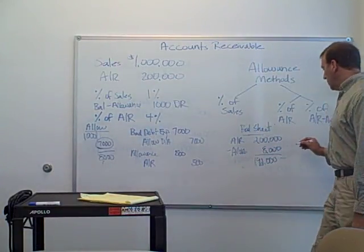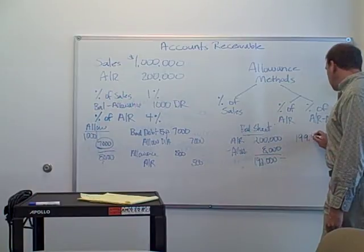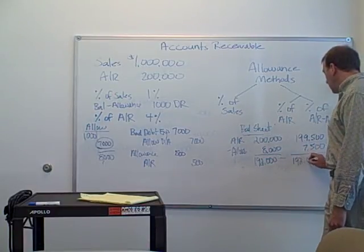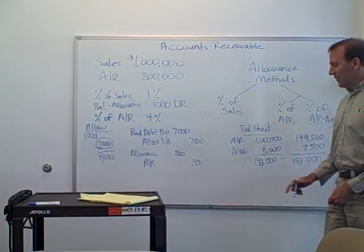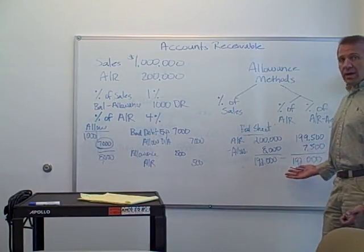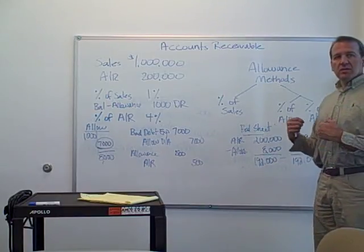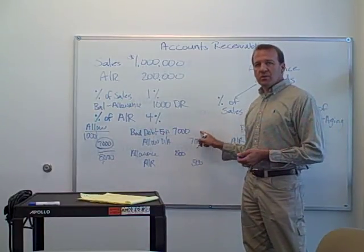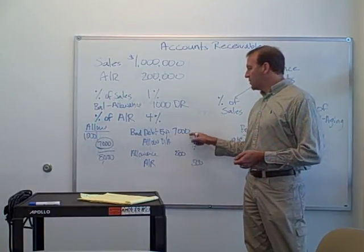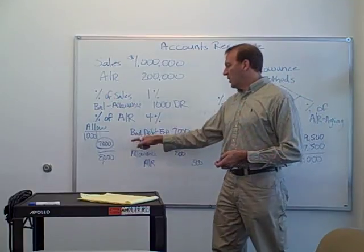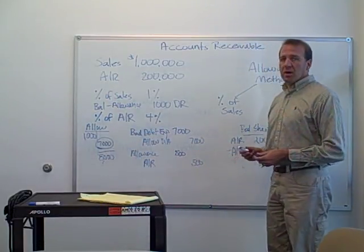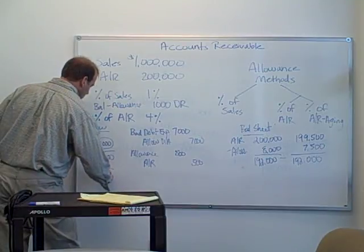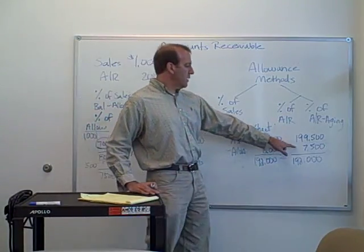What happens to these accounts when we write off $500? Overall, nothing changes to net accounts receivable. Accounts receivable goes down to $199,500, but the allowance also goes down to $7,500, so the net accounts receivable stays the same at $192,000. The expense was recognized last year as part of the year-end adjustment to the allowance, and now we're just using up part of that allowance.